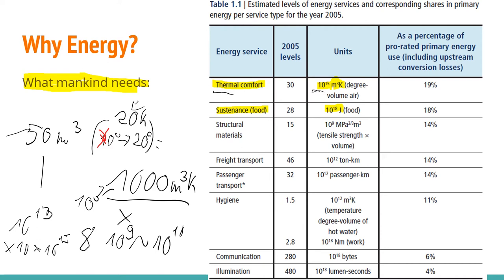The next thing our civilization needs is structural material — all the stuff around us. Our room is built from concrete and steel, our car is built from steel, as are bridges and towers. All these materials have a tensile strength and you can multiply that by the volume. If you do that, you end up with all the material needed to keep our civilization running. Easier to calculate is freight transport: how many tons of material do you want to transport?